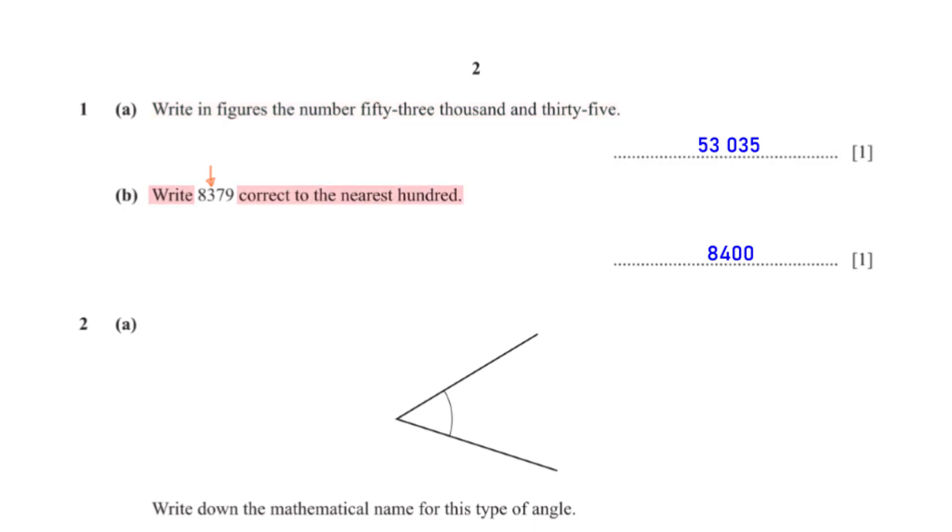Write 8379 correct to the nearest 100. The number in the 100's position is 3. The number after 3, which is 7, is greater than 5, so we add 1 to 3, giving us 4. The numbers after 3 become 0. So we have 8400 rounded to the nearest 100.